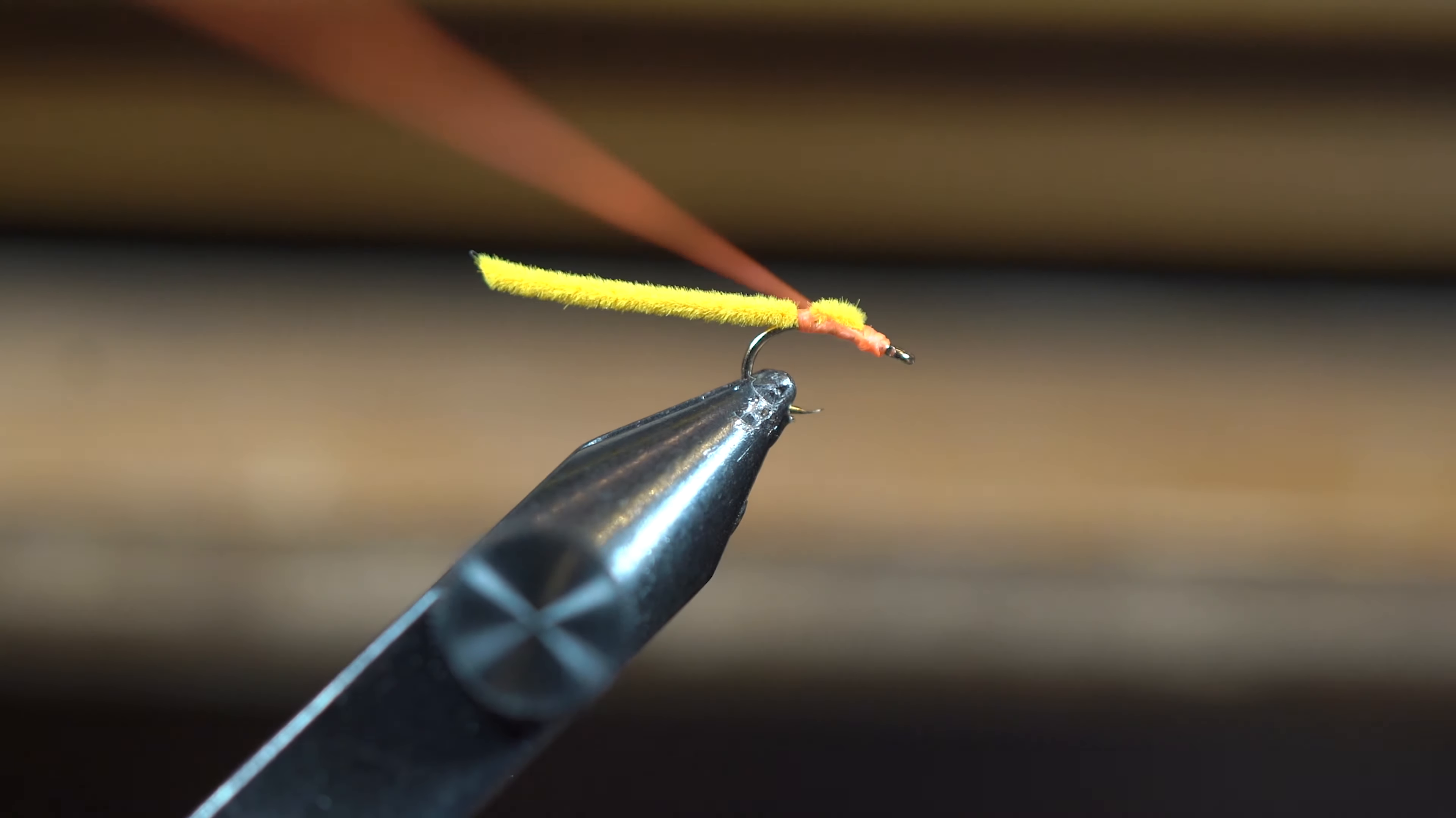I just wrap it down, whip finish, and then cut it. This is a little over an inch—I want it to be right at an inch long, so I'm going to cut about right there. Then I pull out my trusty Bic lighter.